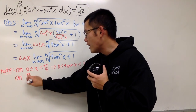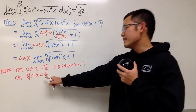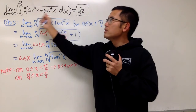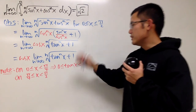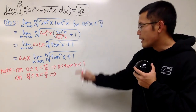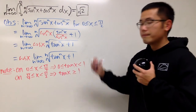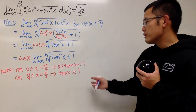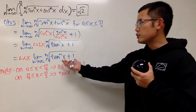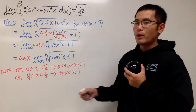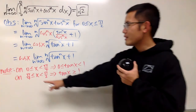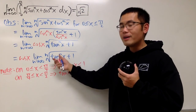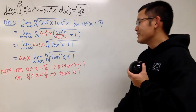Secondly, on the interval from π/4 to π/2 — not including π/2 since tan(π/2) is undefined, though the original integrand is continuous so don't worry about that endpoint — tan(x) is greater than or equal to 1. As n goes to infinity, the tan^n(x) term dominates. At exactly π/4, tan(x) = 1 and 1 to any power is 1. For x beyond π/4, tan(x) > 1, so tan^n(x) → ∞, and the +1 is negligible.